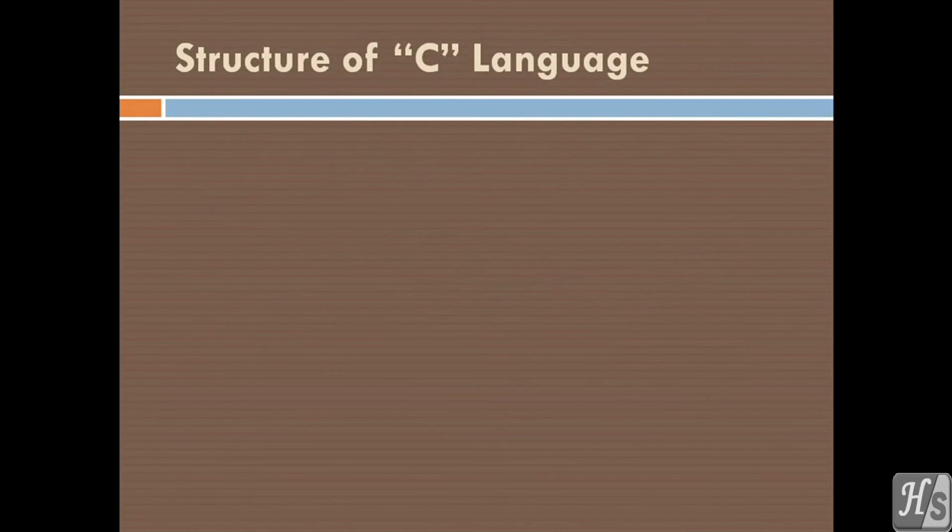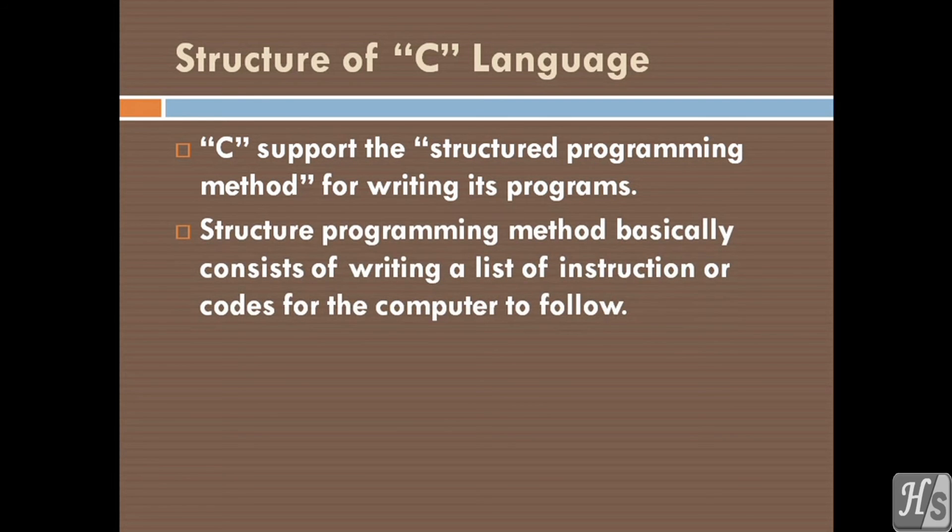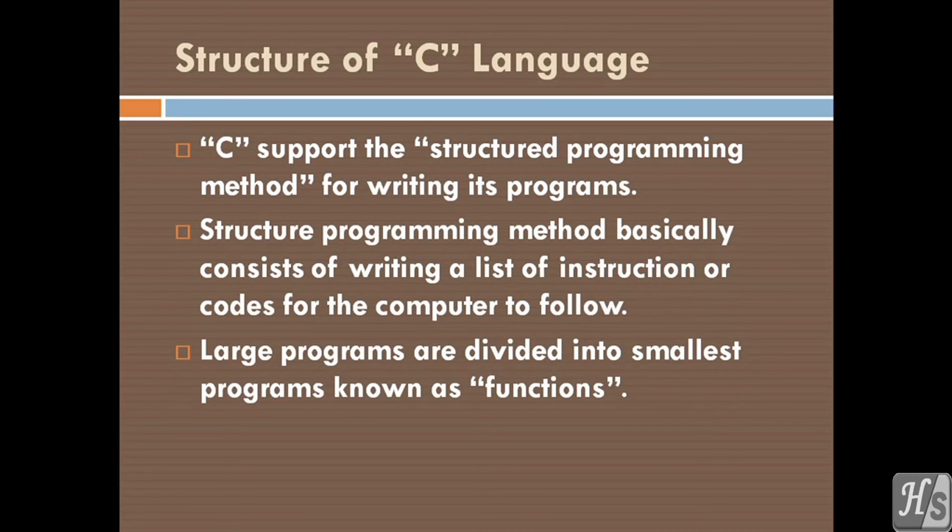Structure of C language. C supports the structured programming method for writing its programs. Structured programming method basically consists of writing a list of instructions or codes for the computer to follow. Large programs are divided into smallest programs known as functions.